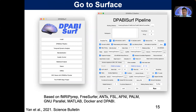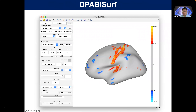Basically, we integrated all of these modules so users do not need to know exactly how to call different modules. Everything is under the hood — they only need one click to have DPABISurf process surface-based results, mostly by fMRIPrep. With just one click you have all the DPABISurf surface-based analysis methods. We also provide a very easy-to-use DPABISurf viewer to view surface-based results, which can also be used in quality control.